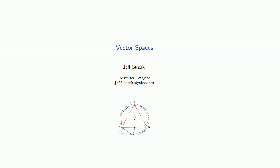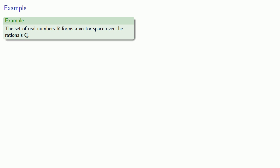Let's take a look at a different set and see if it's a vector space. So how about the set of real numbers and let's see if they form a vector space over the rationals Q.